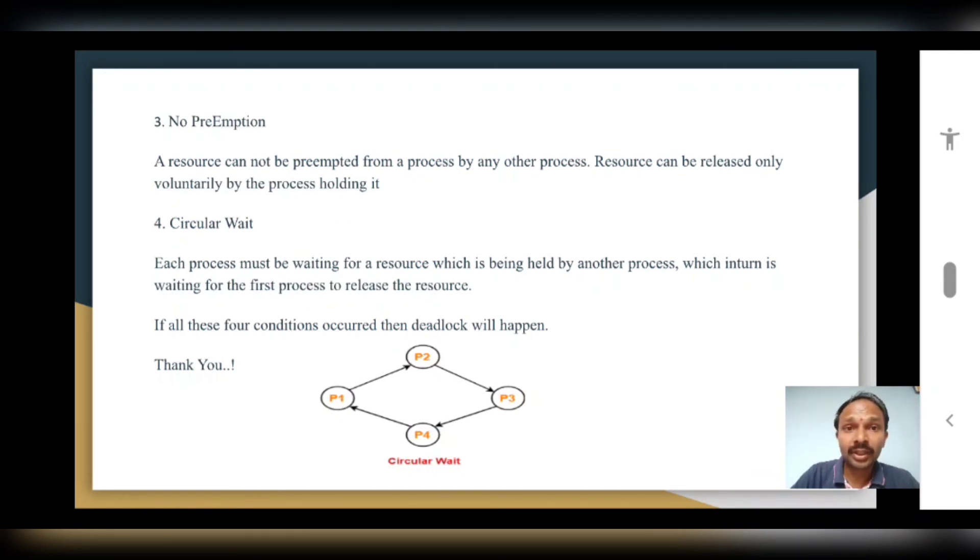Now what is the last condition? If it is there, then the system will go into deadlock. The last condition is circular wait. In circular wait, each process must be waiting for a resource which is being held by another process, which in turn is waiting for the first process to release the resource. So you can observe in this diagram.